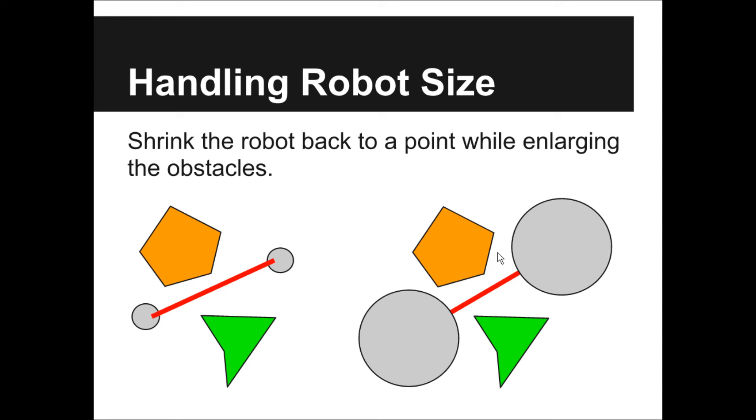To handle the size of the robot, we can shrink the robot back to a point. At the same time, we enlarge the obstacles. In the previous scenario, for a small robot, there is a gap between the obstacles after we grow them.